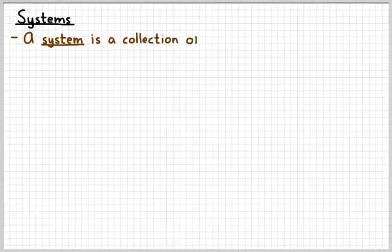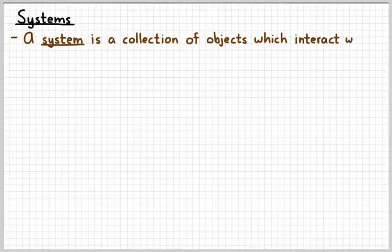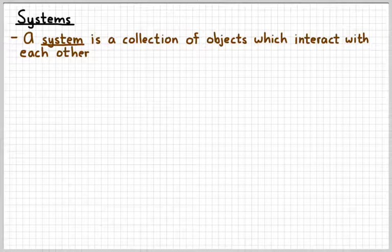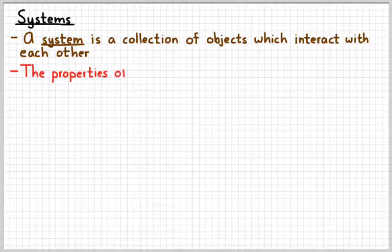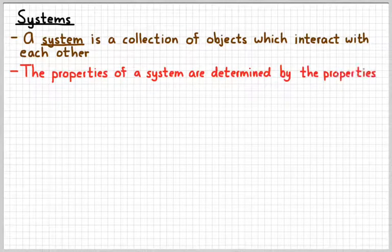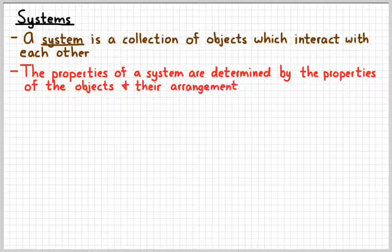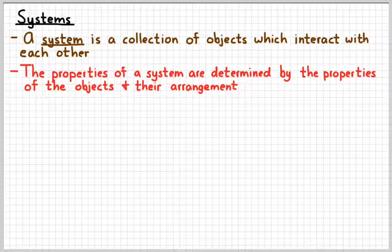The next thing we need to discuss is the idea of a system. A system is a collection of objects. So collection meaning like two or more that interact with each other. And again, remember, objects interact via forces. The properties of a system are determined by the properties of the objects. So for example, the mass of the system is just the sum of the masses of all the objects within the system. And sometimes their arrangement. We're going to see specific examples of that real soon.